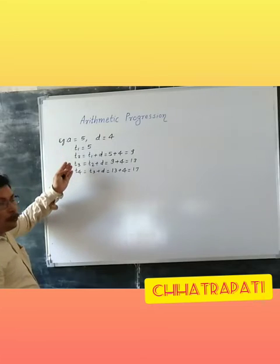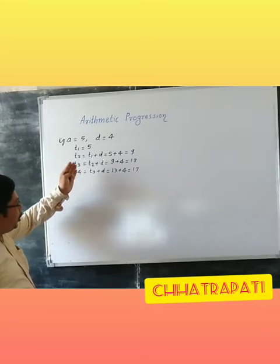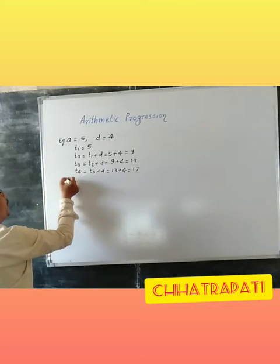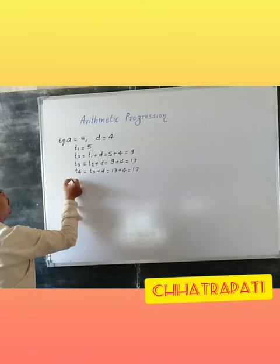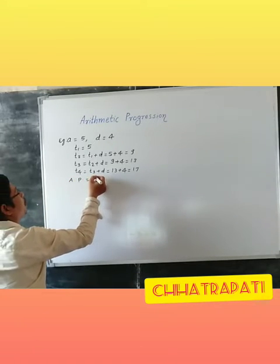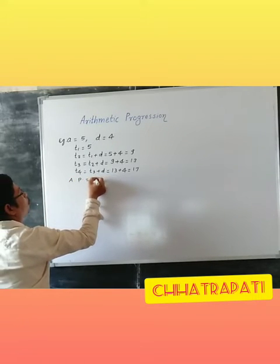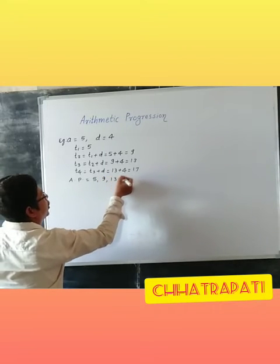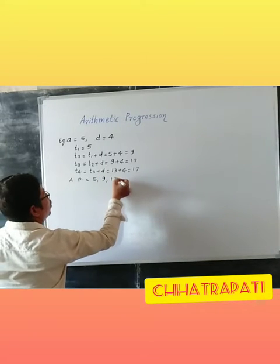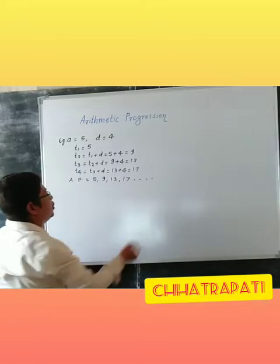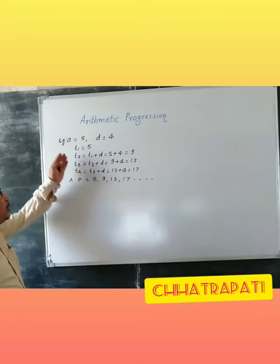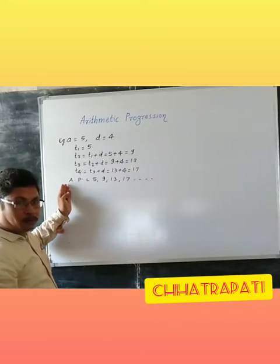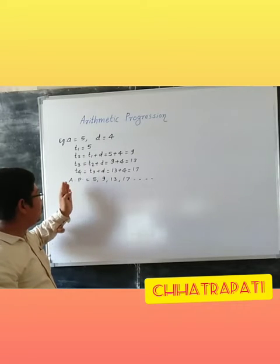In this process we get an infinite number of terms, but we require here the first 4 terms. So we get here our AP: 5, 9, 13, 17. Using this method we can calculate any number of terms.